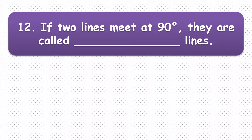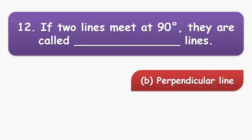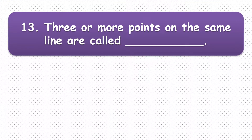Next question: if two lines meet at 90 degrees, they are called blank lines. The options are straight line, perpendicular line, parallel line, or collinear lines. The correct answer is perpendicular line.